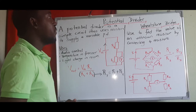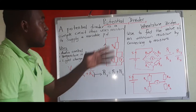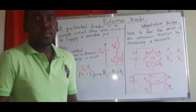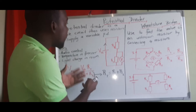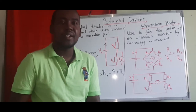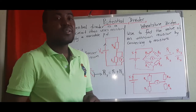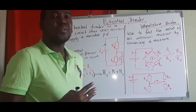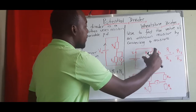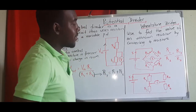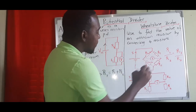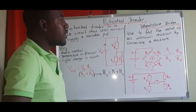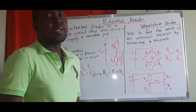Now let's look at what is known as a Wheatstone bridge. A Wheatstone bridge is a simple circuit, just like a potential divider, but it uses four resistors. Those four resistors join together to make that diamond shape, though it can also be drawn in a standard rectangular layout.